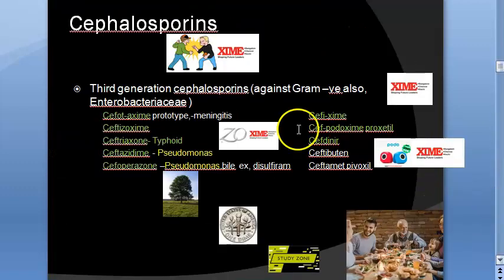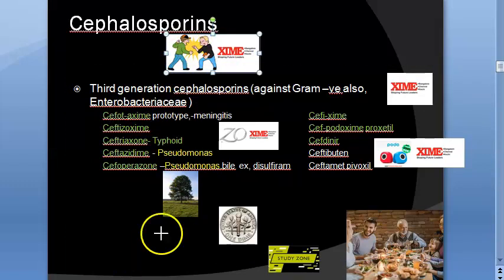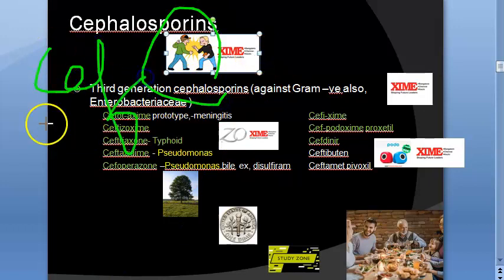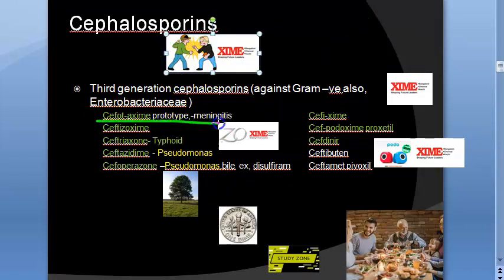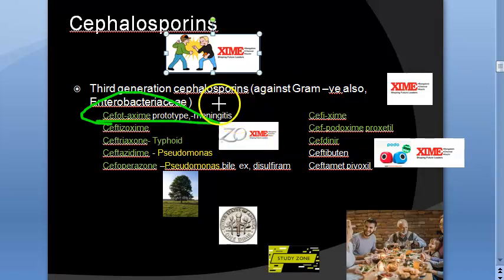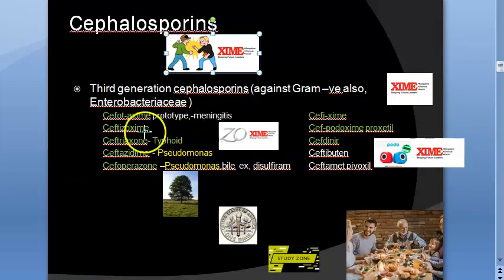Second generation is not used much, so let us move on to third generation, which is very important. Third generation cephalosporins start to become active against gram-negative bacteria. They can slightly cross the blood-brain barrier, so they are active against meningitis. They cover Enterobacteriaceae like E. coli, Salmonella, Yersinia pestis, Klebsiella, and Proteus.